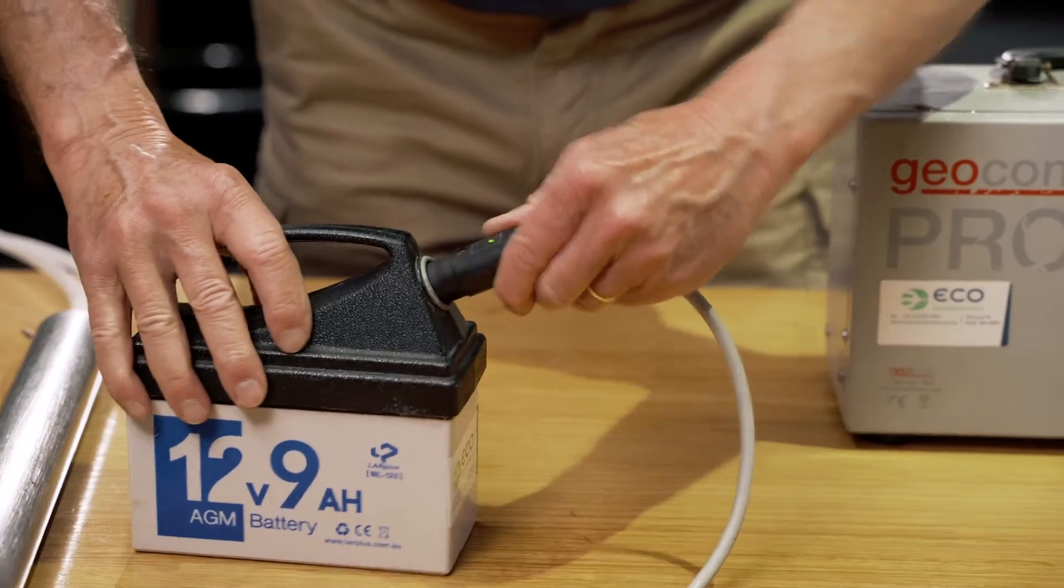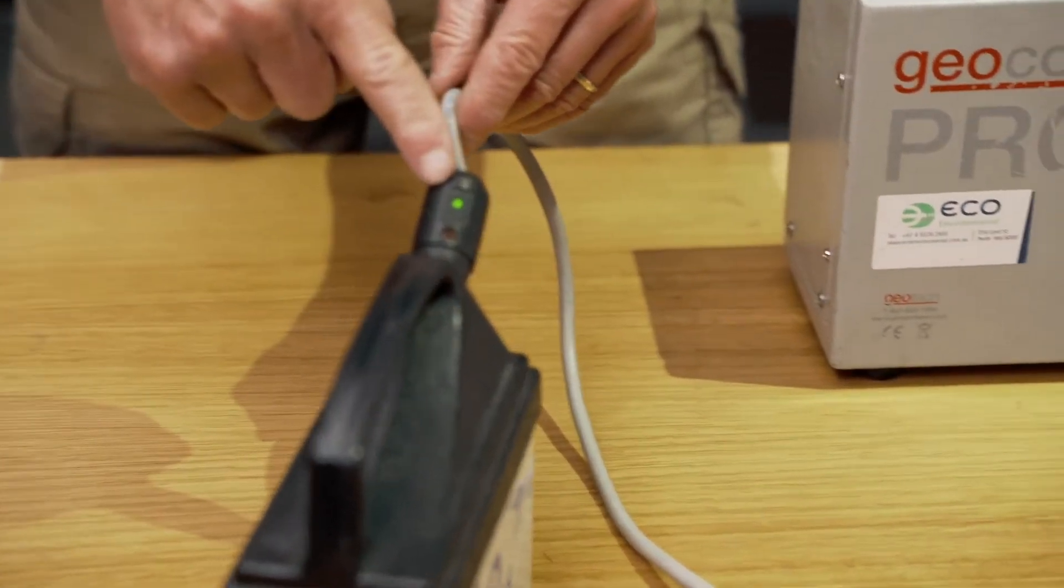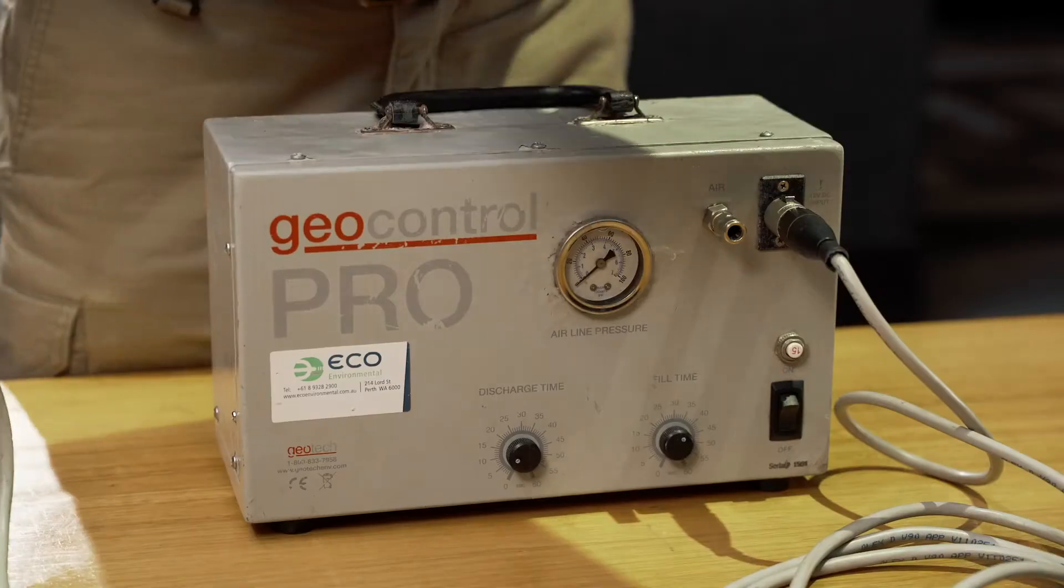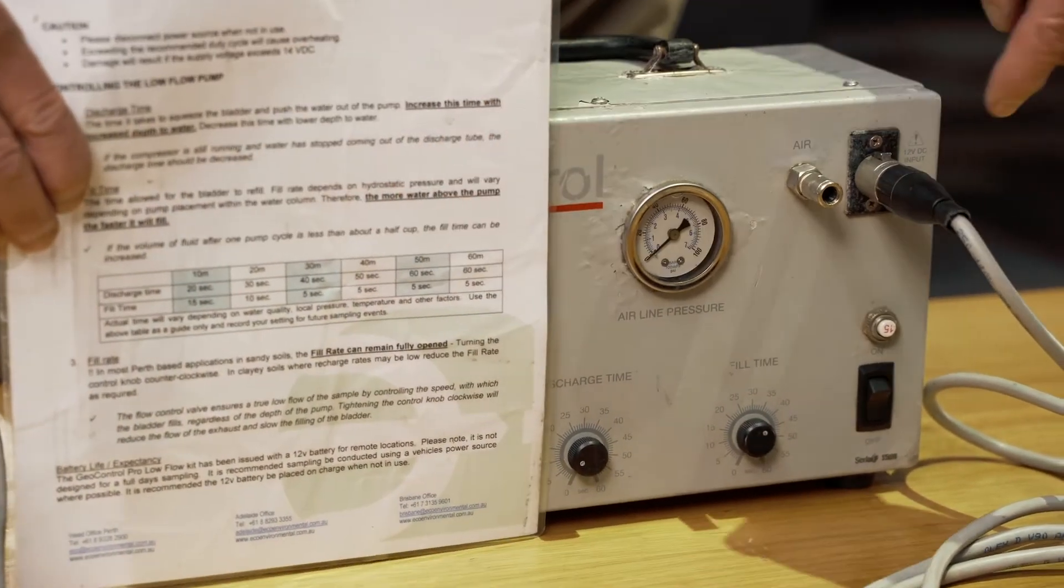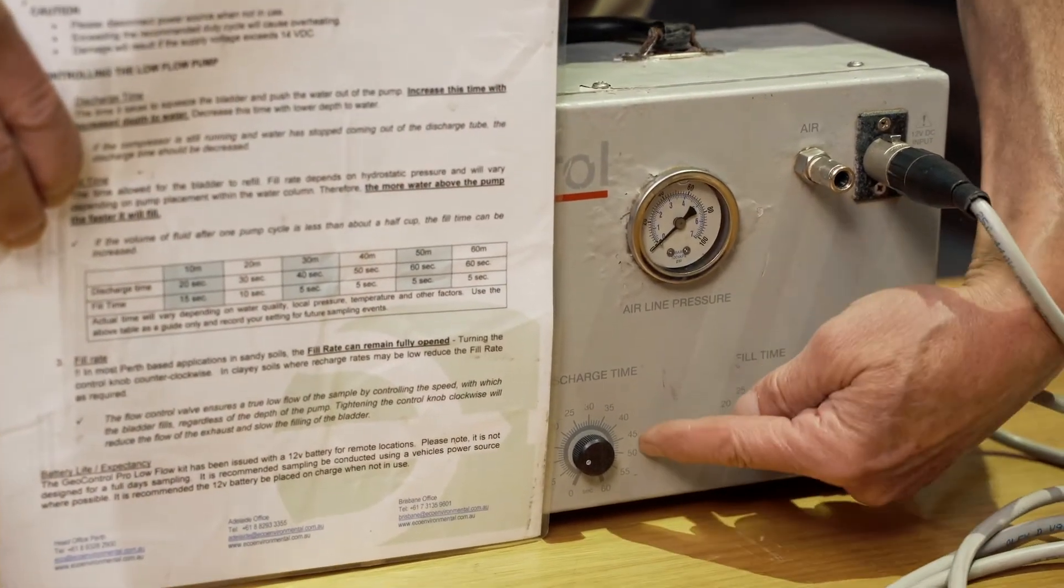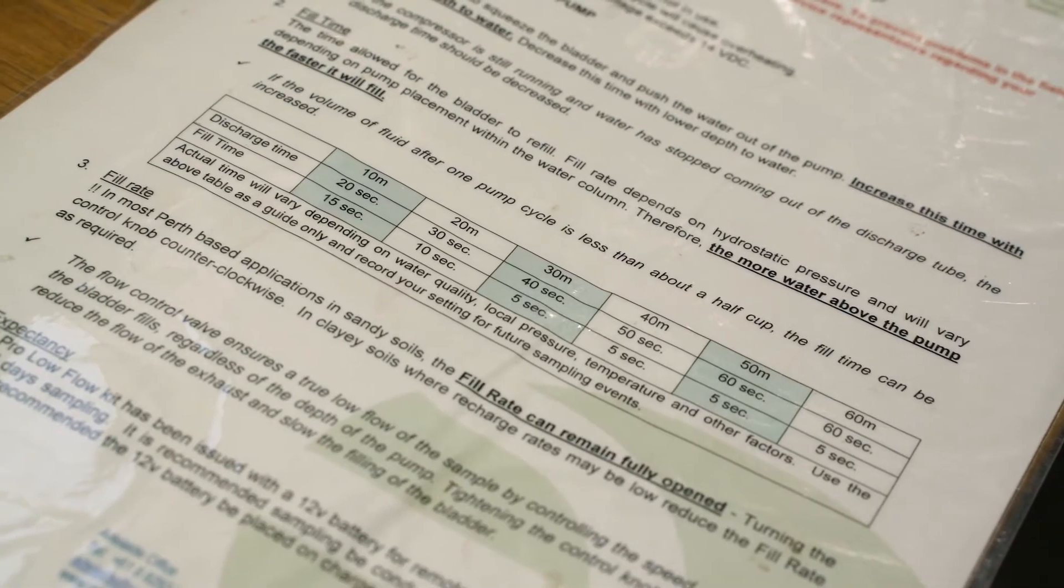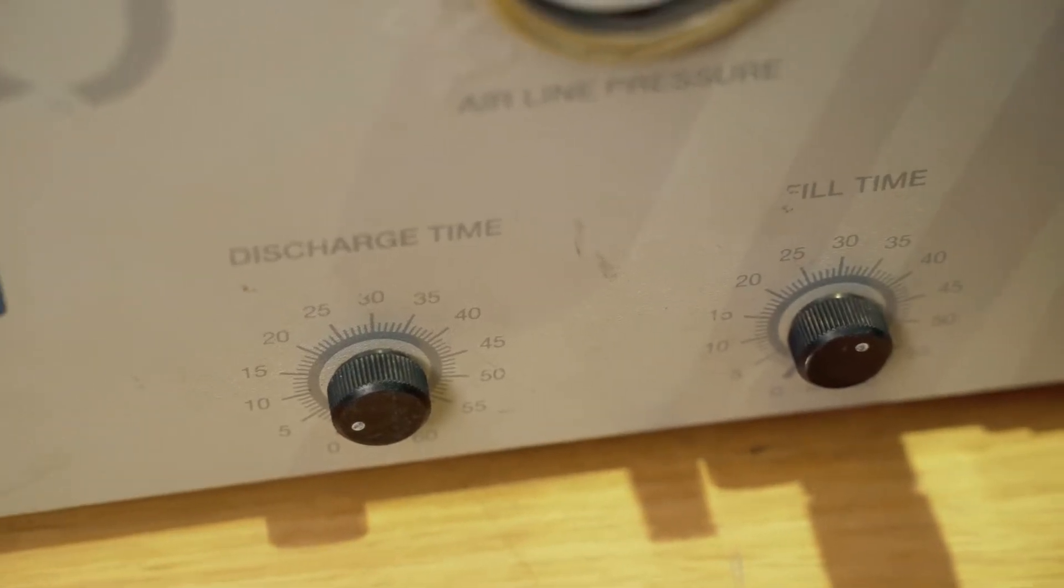When connecting the battery, make sure you are getting a constant green light to show connection. Use the datasheet provided to determine the discharge and fill time settings on the controller. Remember, this is a bladder pump and the water will discharge in pulses, not a constant stream.